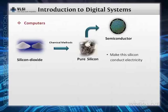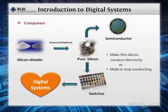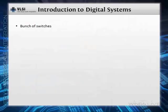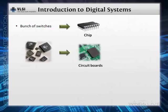We can make this silicon conduct electricity or we can make it stop conducting. This method can be used for making switches, and these switches are the heart of digital systems or circuits. If you use a bunch of switches, you can make a chip. If you use a bunch of chips, you can make some circuit boards.